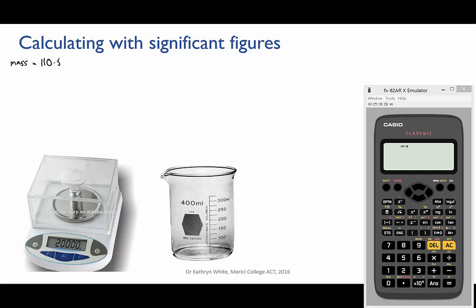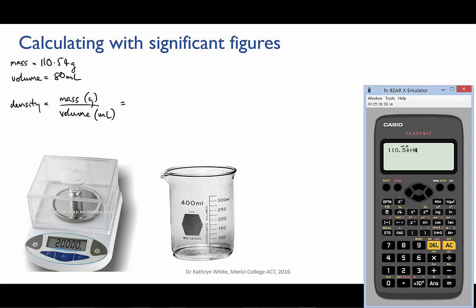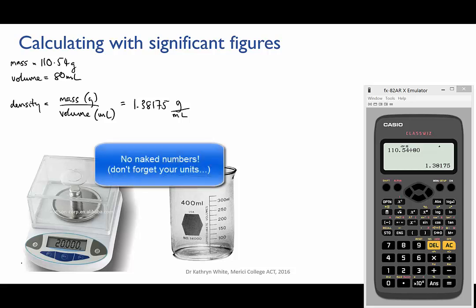Let's say this is your mass and this is your volume, and let's put that in the calculator to calculate the density. And the calculator tells us that we have 1.38175, and we're going to put the units in as grams per mil because the units of our mass was grams and the units of our volume was mils, and we don't like naked numbers.